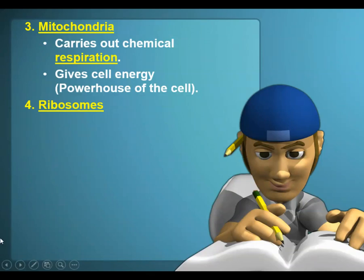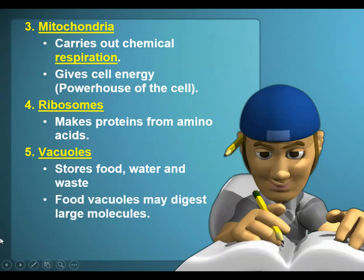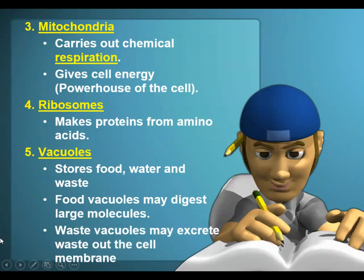Ribosomes are the next organelle, and they make proteins from amino acids. Vacuoles are going to store food, water, and waste. Food vacuoles may digest large molecules, and there's a large water vacuole in plant cells that stores a large amount of water. Waste vacuoles can excrete waste by moving to the cell membrane and releasing waste products.